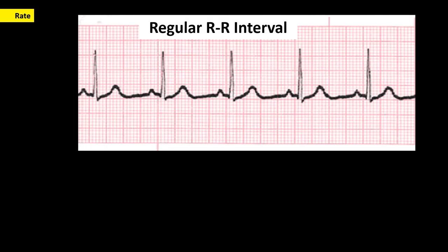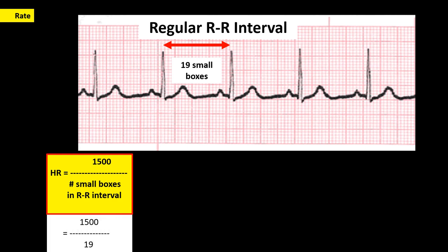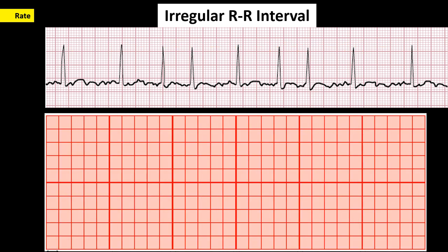For a regular R to R interval, count the number of small boxes in the R to R interval. Then use the formula: heart rate equals 1500 divided by the number of small boxes in the R to R interval. In this ECG tracing, there are 19 small boxes. So using the formula, 1500 divided by 19, the heart rate is 79 beats per minute. We learned earlier that one small box is 0.04 seconds, so one big box is 0.2 seconds, five big boxes is one second, and 30 big boxes equals 6 seconds.